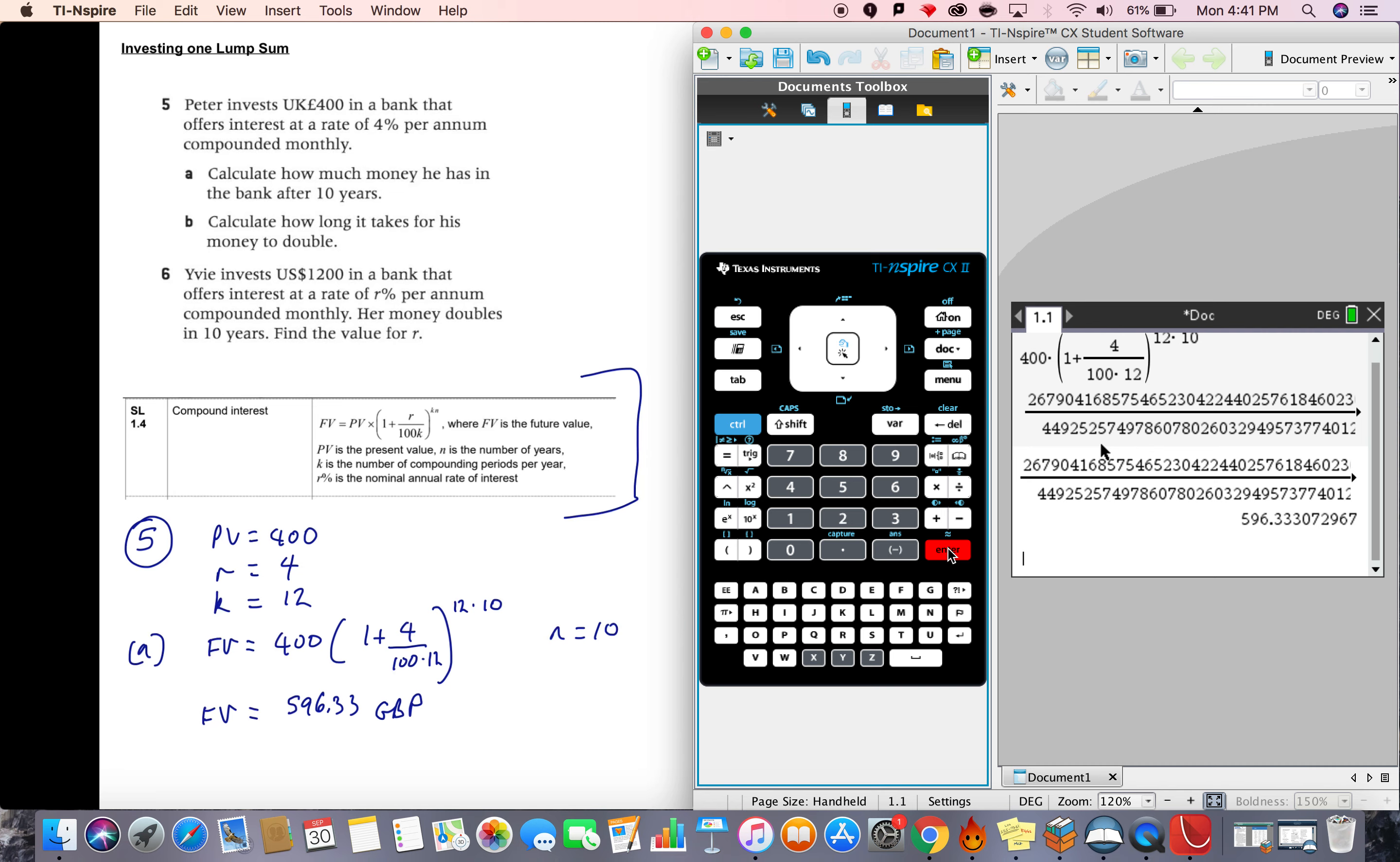Okay, so calculate how long it takes for his money to double. We're going to go back to the original question. Let's just do part B here. So the present value is 400, the final value will be 800. So 800 equals 400 times 1 plus 4 over 100 times 12, to the power of K times n. So exactly the same equation, but now we've got an unknown to solve for.